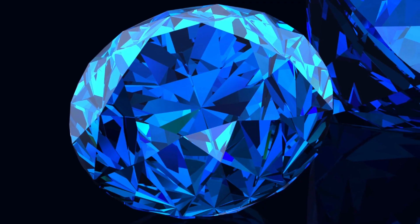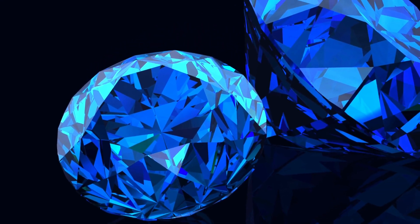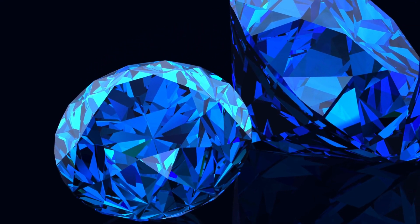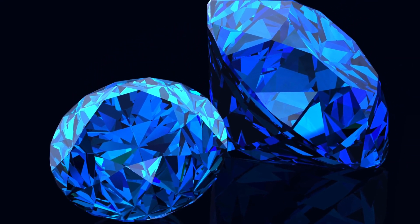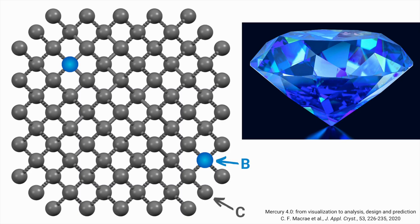Another fancy colored diamond whose color is due to impurities is the blue colored diamond. Similar to the yellow diamonds, as the atoms get packed together in the diamond lattice, some of the carbon atoms are substituted by other chemical elements. In the case of the blue diamonds, the chemical element that substitutes some of the carbon atoms is boron.